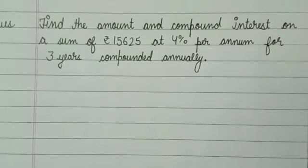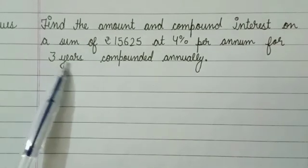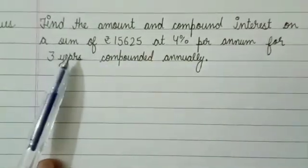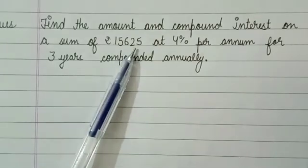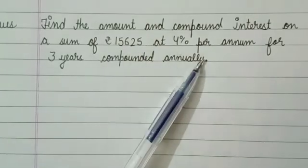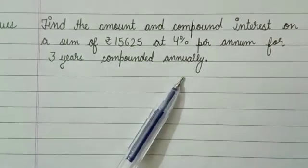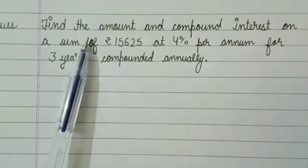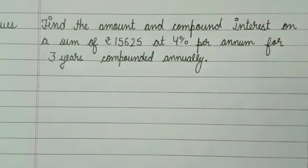Hi friends, welcome back to my channel. Today we will solve this question: find the amount and compound interest on a sum of rupees 15625 at 4% per annum for 3 years compounded annually. We have to find the amount and compound interest, and first we will write down the things whatever is given.